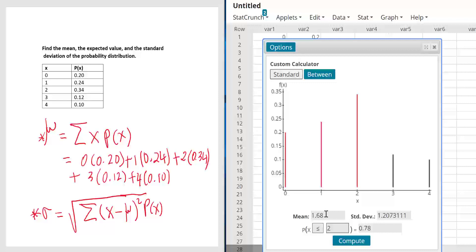The mean is 1.68. It's already there. So if I do the math here, it's going to be 1.68. And the standard deviation is 1.207. What is the expected value? The expected value is the same as the mean, which is 1.68.